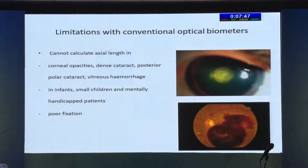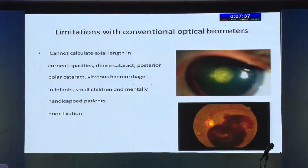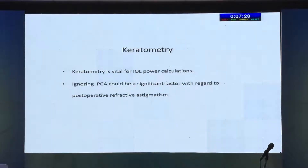The limitations — I wouldn't say they still apply. Previously, with dense cataracts, especially posterior subcapsular and dense mature cataracts, these optical biometers were not working. But with swept source, you'll be surprised — in a totally white cataract, you still get a reading, and the reading is very, very accurate.